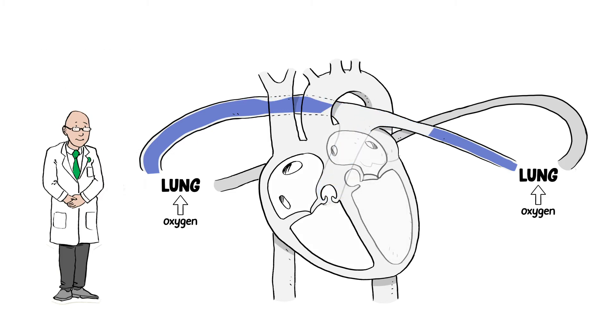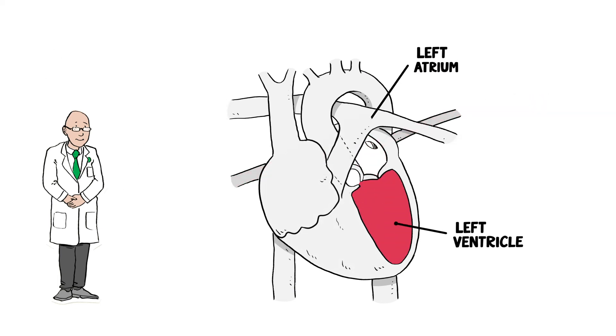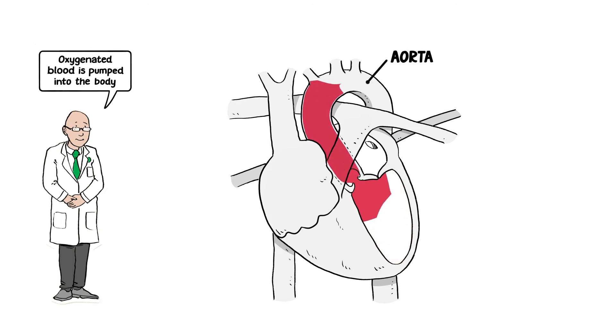Then the heart takes the oxygenated blood back in through the left atrium and then into the left ventricle. From there, the oxygenated or red blood is pumped through the aorta back into the body.